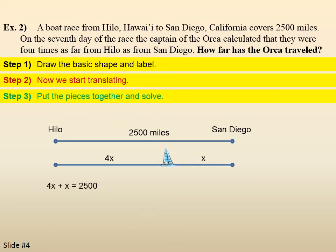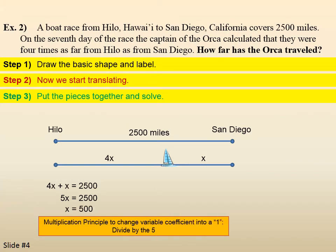And, now we put the pieces together. Well, 4x plus x would be the total distance. And, the total distance is 2,500. Collect like terms. 4x plus x. We use the multiplication principle. Divide by 5. Gives us x equals 500.